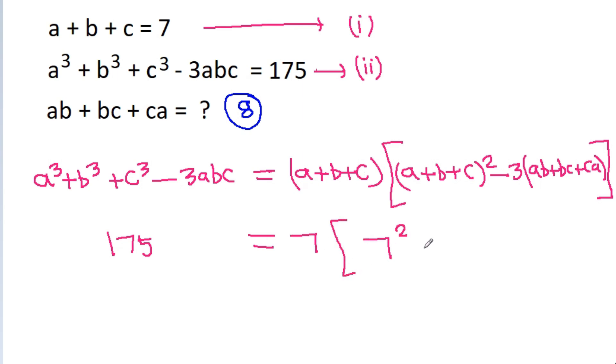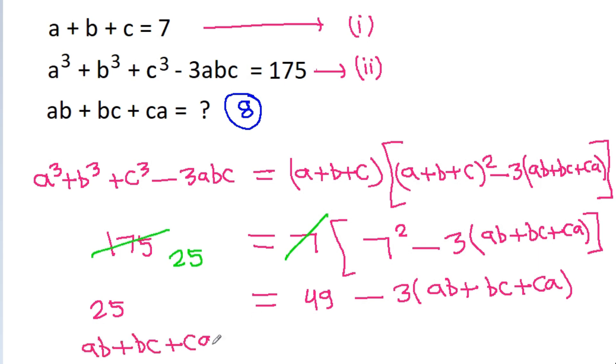So we get 175 is equal to 7 times (7² minus 3 times (ab+bc+ca)). And 7 times 25 is 175. So we get 25 is equal to 49 minus 3 times (ab+bc+ca). And we can get ab+bc+ca is equal to (49 minus 25) is 24 by 3 is 8. So by this method also we get ab+bc+ca is equal to 8.